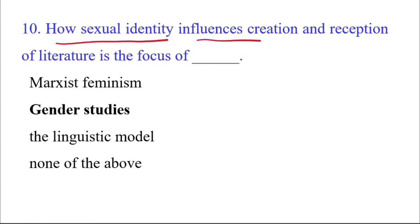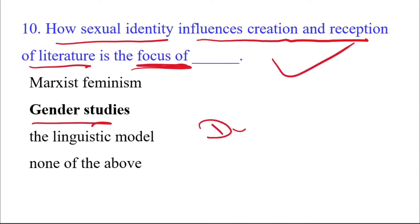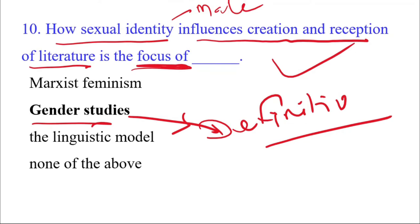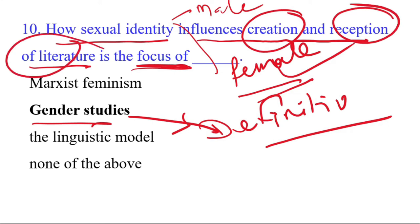The next question asks: how sexual identity influences the creation and description of literature is the focus of what? This is the definition of gender studies. If a male writer writes, his literature is different; if a female writer writes, her way of writing is different. So in gender studies, sexual identity influences the creation and description of literature — the approach to reading a male writer's work differs from that of a female writer.